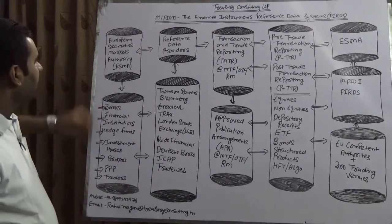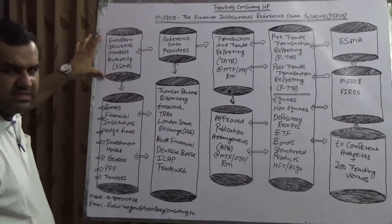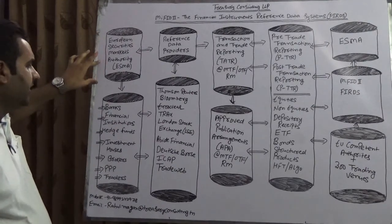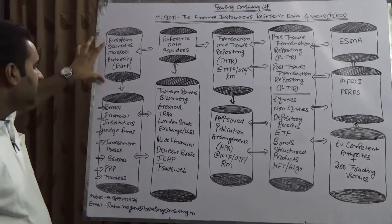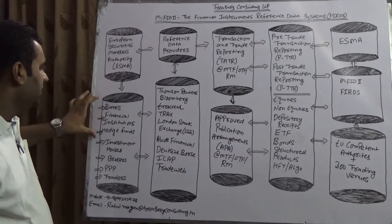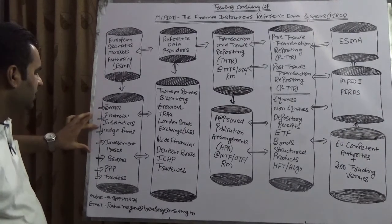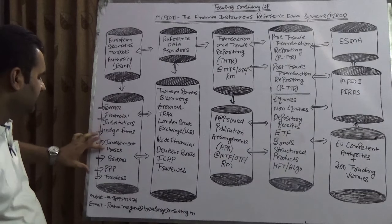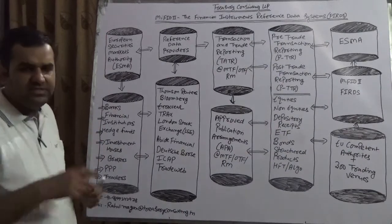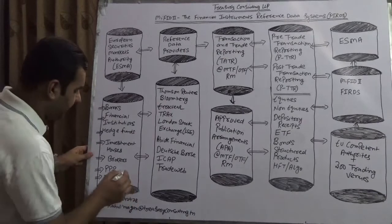We have the highest authority in Europe, which is ESMA — European Securities Market Authority. This is being controlled by controlling banks, financial institutions, hedge funds, investment houses, and brokers. Please remember this line very carefully because the next video is about that.